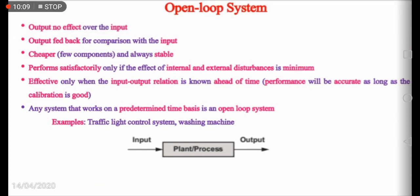Let us discuss the features of an open loop system. In an open loop system, the output does not have any effect over the input; the output is not fed back for comparison with the input. It is cheaper because it involves only fewer components. Generally, the open loop system is stable. Open loop systems perform satisfactorily only when the effect of internal and external disturbances is minimum. It is used only when the input-output relation is known ahead of time; its performance is accurate as long as the calibration of the components is maintained properly. Any system which works on a predetermined or fixed time basis is called an open loop system.